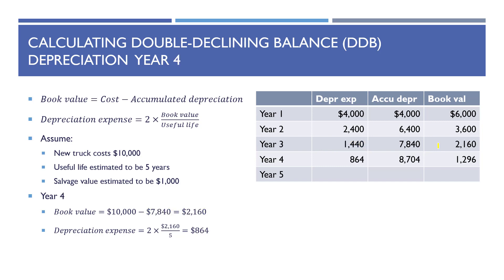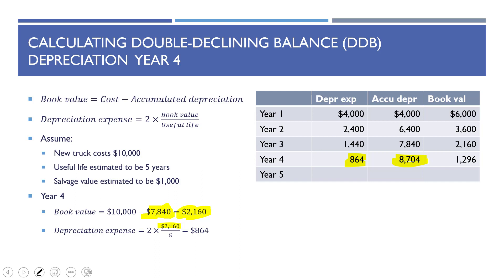In year four, accumulated depreciation is $7,840, so book value is $2,160. Depreciation expense is two times $2,160 divided by five, or $864. Year four depreciation is $864. Accumulated depreciation becomes $8,704 — that's $7,840 plus $864 — and book value is $1,296.